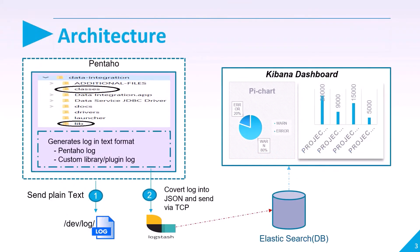Let us discuss the architecture. If you download Pentaho 9, you will get a lot of directories in that software. Inside the data integration directory, you will get a classes folder and a lib folder. All the jar files already downloaded, mentioned in the previous slide, need to be placed under the lib folder. And the configuration file logback.xml needs to be placed under the classes folder.